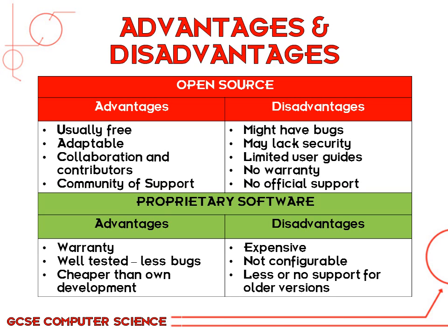Collaboration and contributors means that a lot of people in a community can support each other, contribute new features and functions to make the software better, and collaborate on bigger projects. A community of support is often available for open source software, meaning you can get help if you're struggling or have an error to fix.